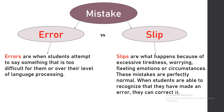Errors are when students attempt to say something that is too difficult for them, or beyond their level of language processing — they happen because of a lack of knowledge. On the other hand, slips happen because of excessive tiredness, worry, fleeting emotions, or circumstance. Slips don't mean that students don't know the rules.